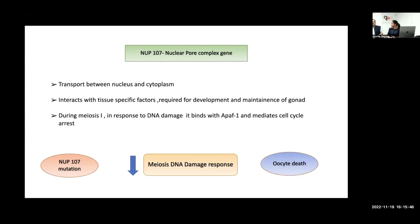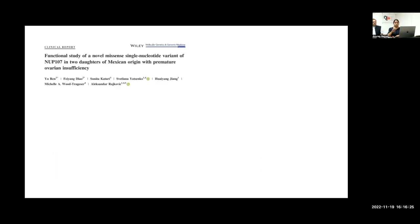However, this case presents a dilemma: we have a 46 XY individual with a gene defect known to affect oocytes. This raises the question of whether there is a double-hit model — perhaps ovaries developed initially and were then damaged, or whether this gene is acting at the level of germ cells more broadly. The NUP107 gene primarily affects meiosis, which in females occurs early (in oocytes) but in males occurs only from puberty onward in spermatogenesis — so the mechanism is not straightforwardly fitting.